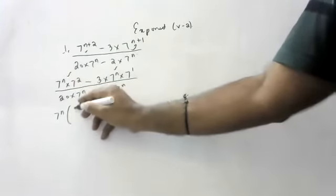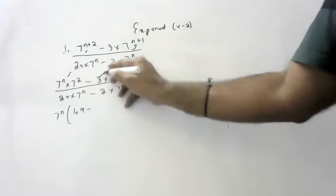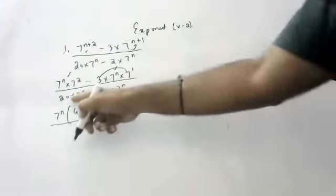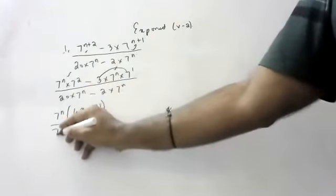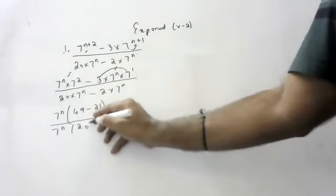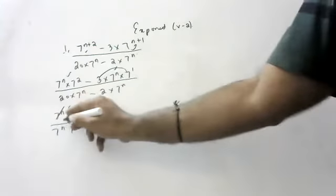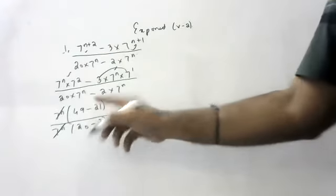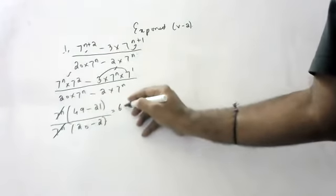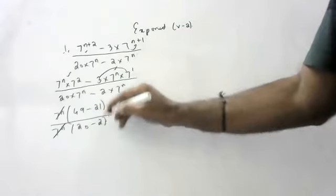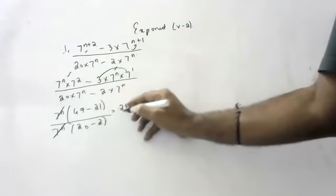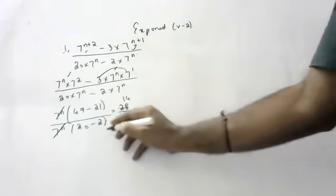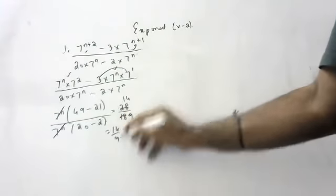So 7 to the power n is common. 49 minus 21 equals 28. What is common in the denominator? 7 to the power n. So 7 to the power n cancels. 49 minus 21 is 28, denominator is 20 minus 2 equals 18. So 28 by 18, simplified: 14 by 9.